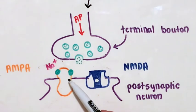Glutamate binds to the AMPA receptor, causing AMPA to undergo a conformational change. Sodium can now flow into the post-synaptic neuron.